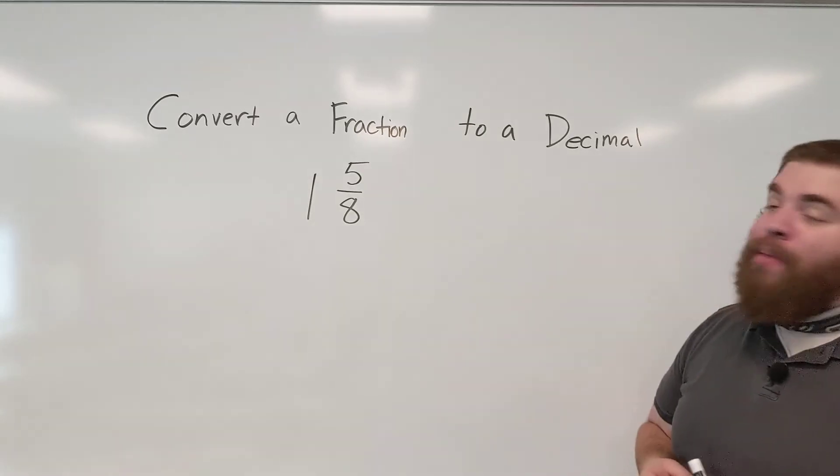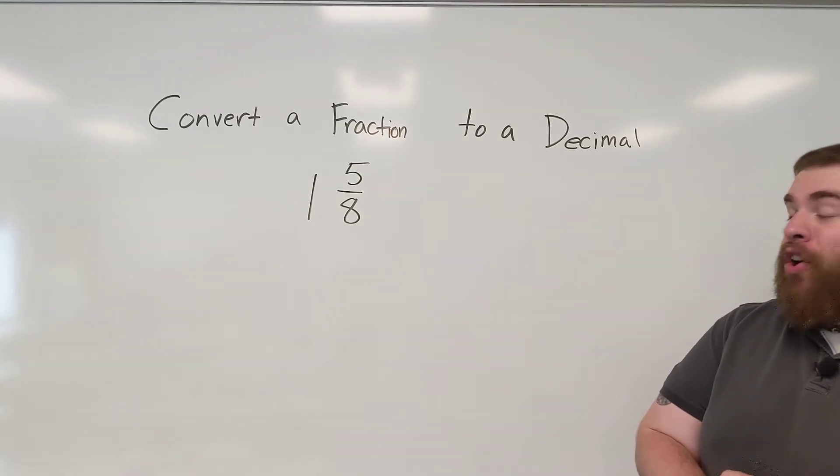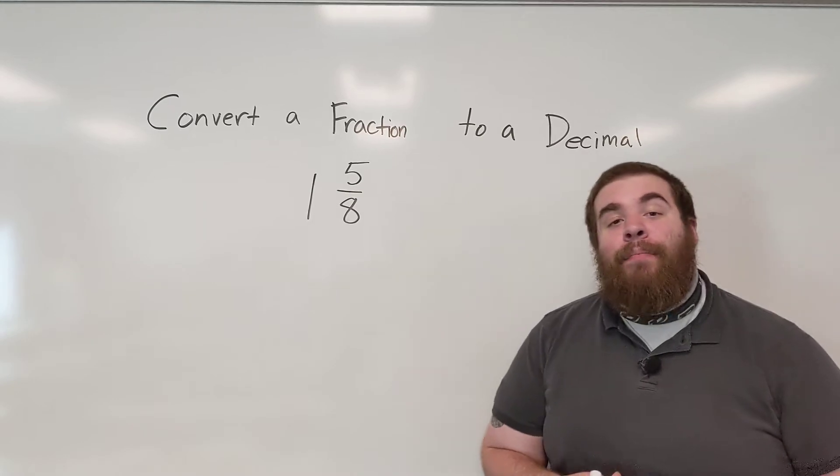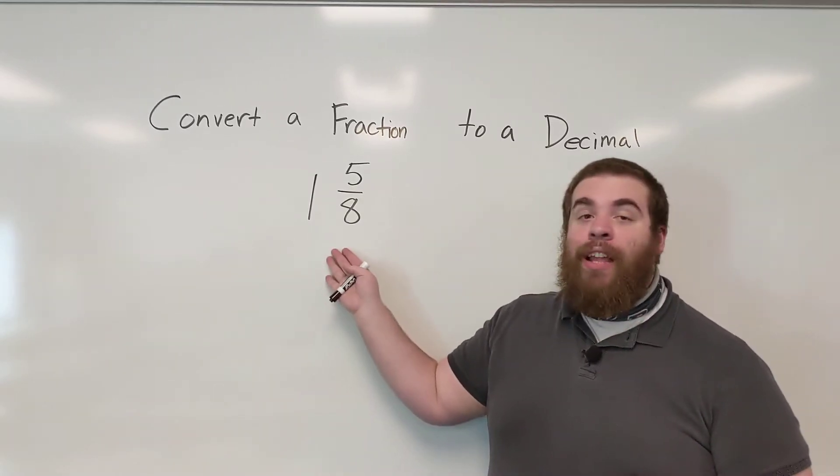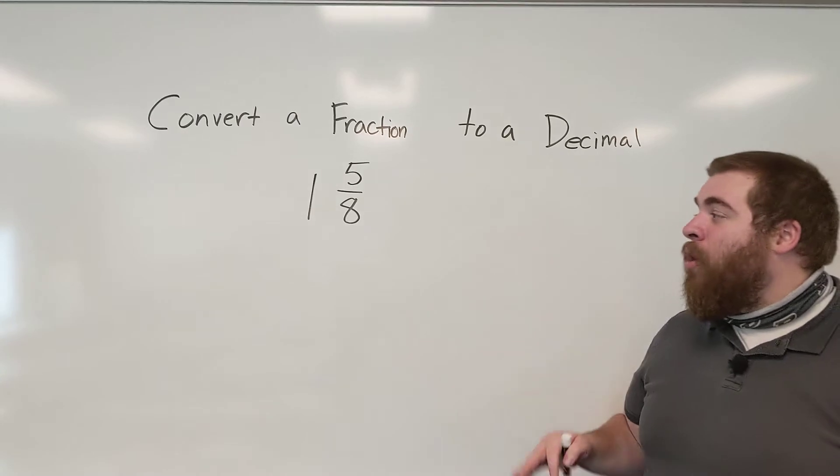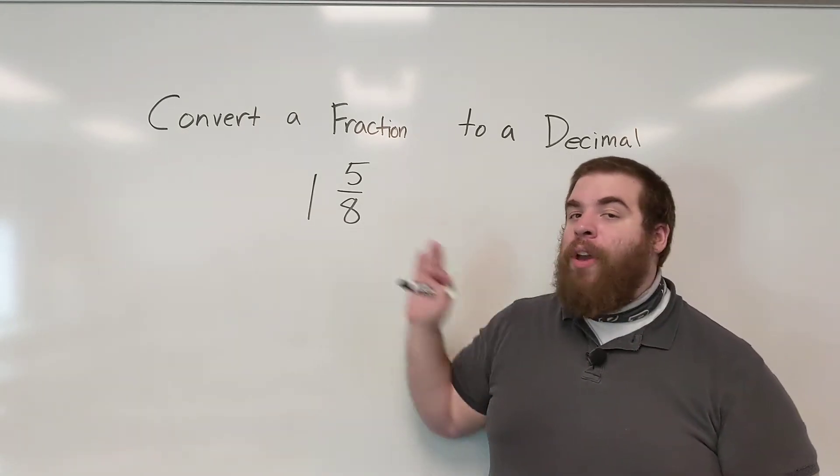In this case here we have a mixed number that we are going to be converting to a decimal. It's important to know that when we are converting our mixed numbers to a decimal, our whole number always stays the same.